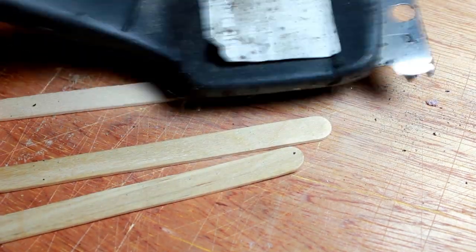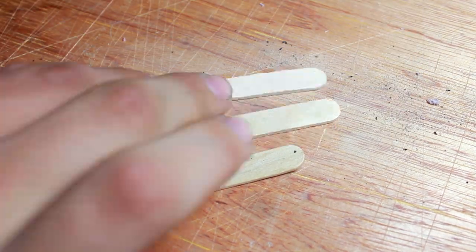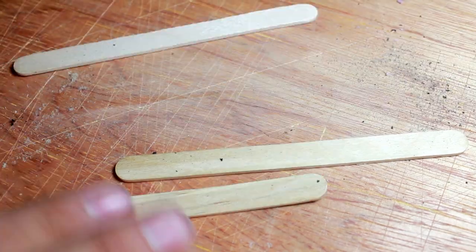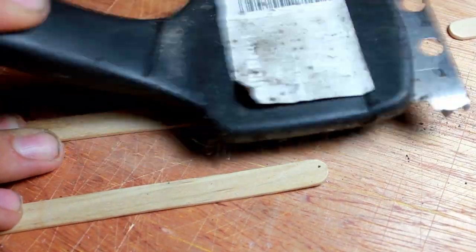First thing I did was I took some popsicle sticks and I took a stiff wire brush and I began scraping the heck out of them. This will help make the ridges and all the different shapes in the wood really stand out.